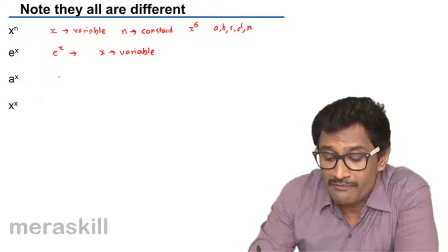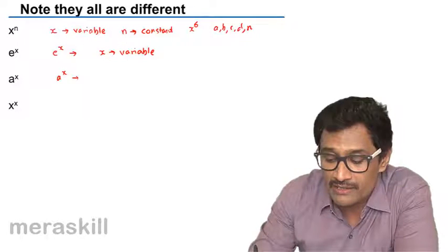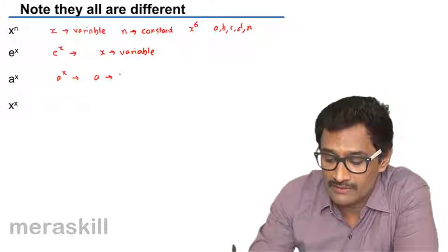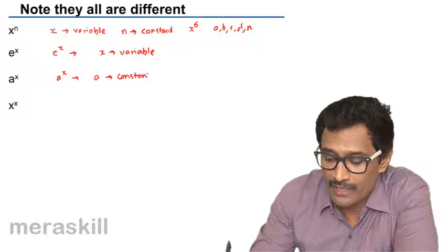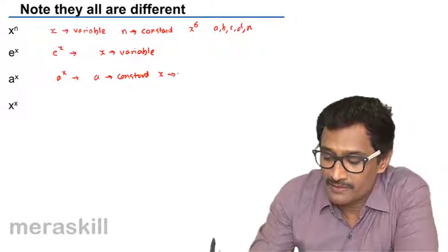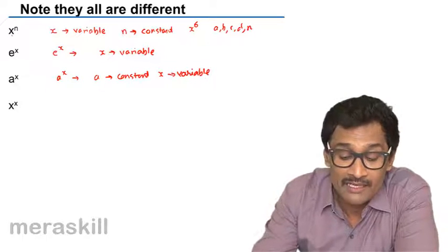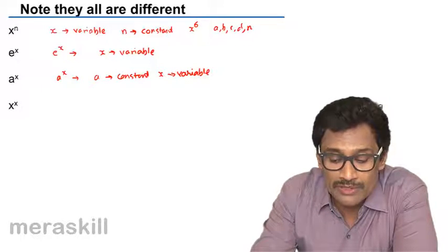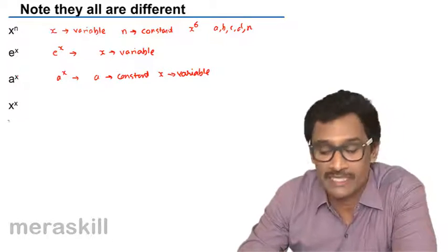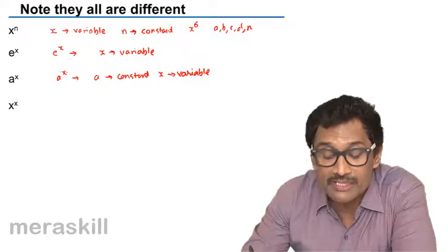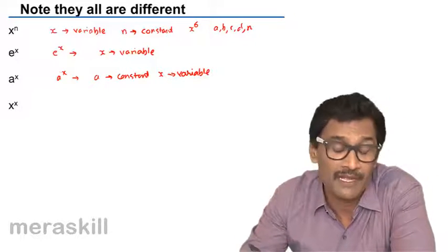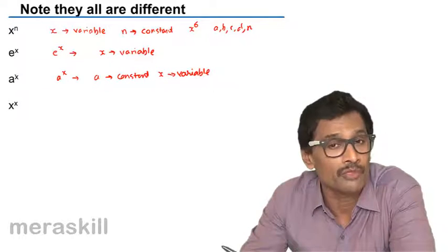Then you have a raised to x. Now here a is a constant while x is a variable. This is almost an inverse of the first formula. Here you had x raised to a number. Here a number has been raised to x. So you have a constant being raised to a variable. How do you find the derivative? There is a standard formula for this.